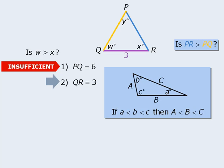We should be able to see that side QR having length 3 does not affect whether or not the blue side is longer than the yellow side. As such, statement 2 is not sufficient.